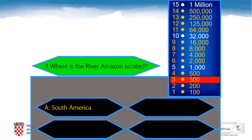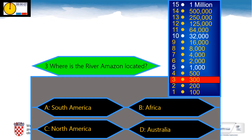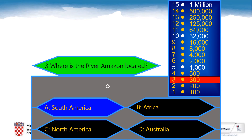Are you ready for the third question? This one is about continents. Where is the River Amazon located? A: In South America, B: In Africa, C: In North America, D: In Australia. And the correct answer is in South America.